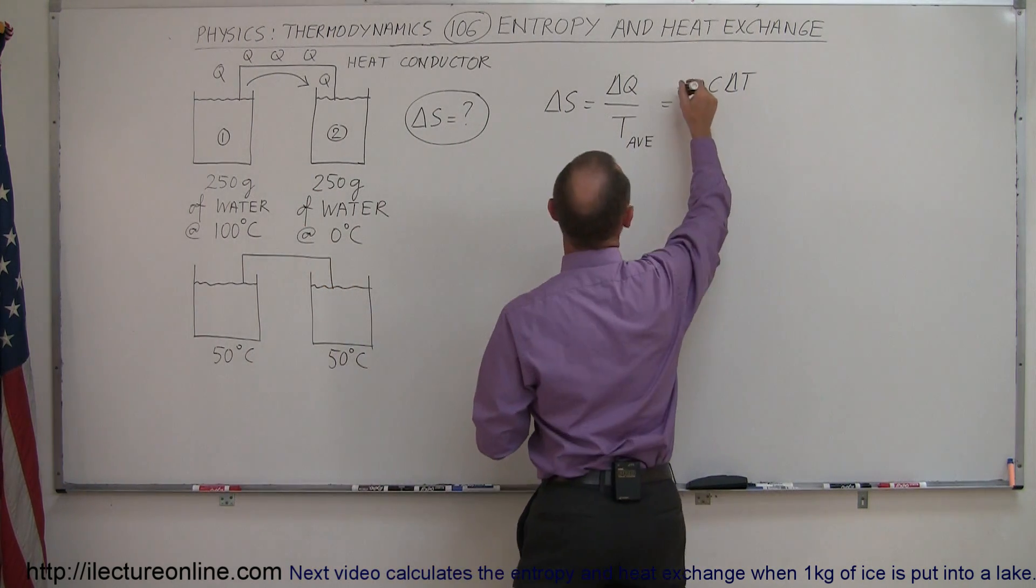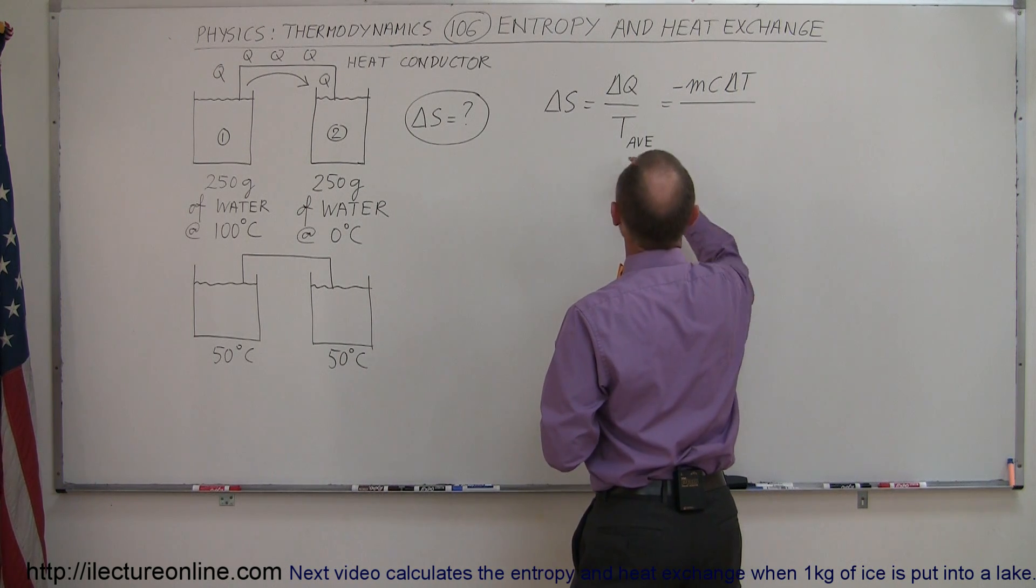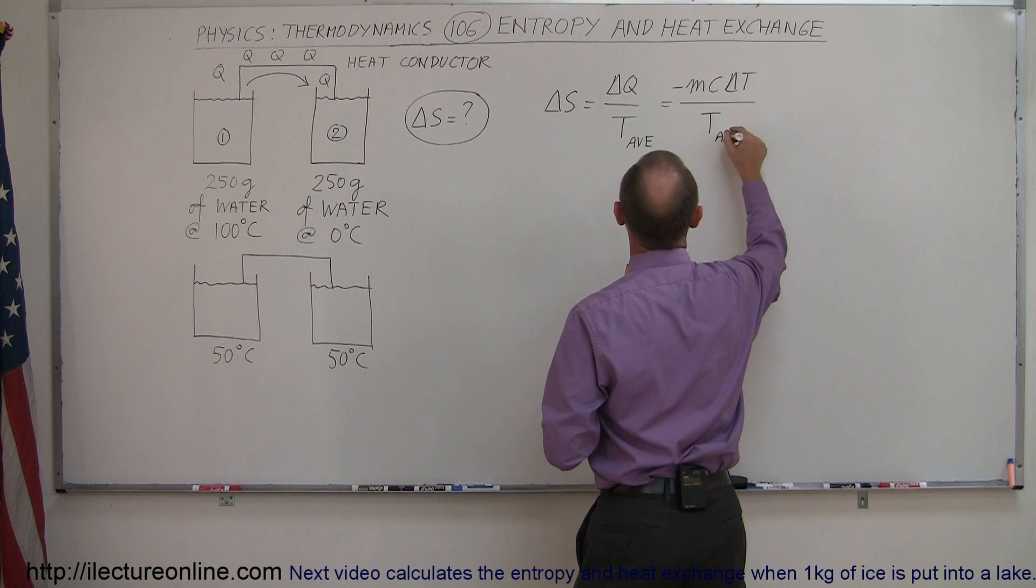Well, since we're taking heat away from the cup, that has to be a negative quantity, so it needs to be a minus MC delta T divided by the T average at which this occurs, T average.